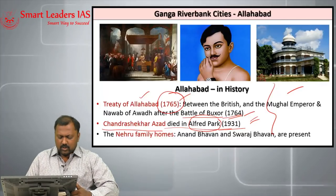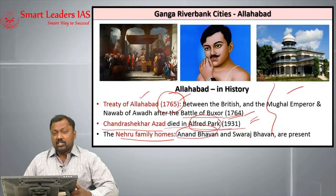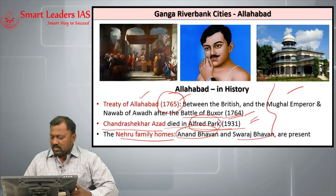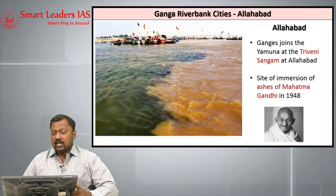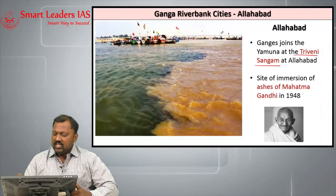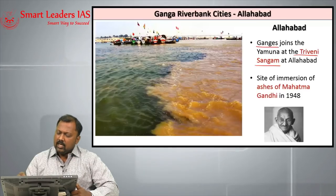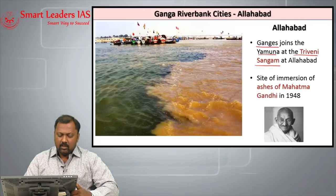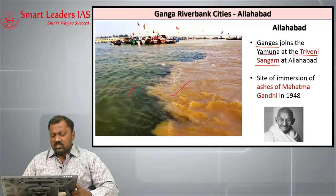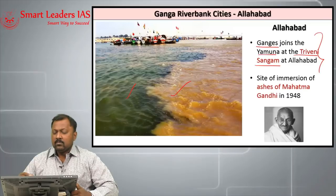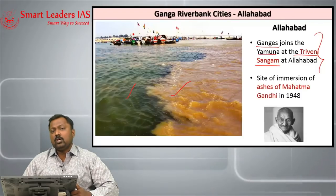Allahabad also has a long tradition associated with the Nehru family — Anand Bhavan, the traditional house of the Nehrus, is located here, along with Swaraj Bhavan. Allahabad is also the site of Triveni Sangamam, the confluence of three important rivers: Ganga, Yamuna and the mythical river Saraswati, which is believed to merge with the other two from underground.